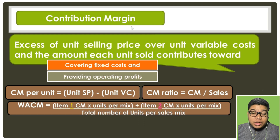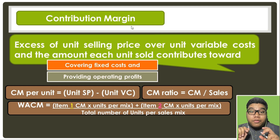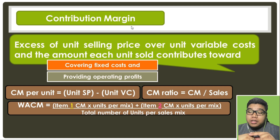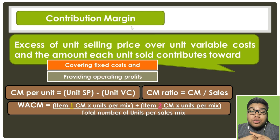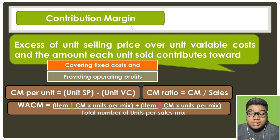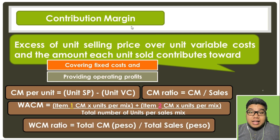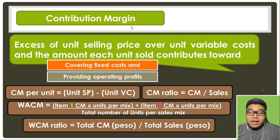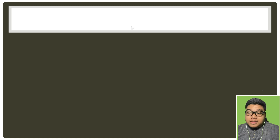The weighted average contribution margin applies only when there is more than one product. We assume the sales mix remains constant within the relevant range. It is computed as: (Item 1 CM × units in mix) + (Item 2 CM × units in mix), divided by the total number of units per sales mix. To get the weighted contribution margin ratio, we divide total contribution margin in pesos by total sales.